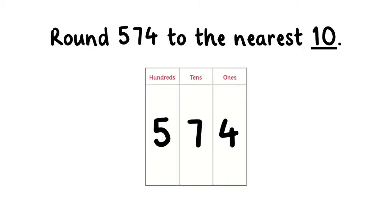Now, let's round 574 to the nearest tenth. Since the ones digit is four, which is less than five, we keep the tenths digit the same. Therefore, 574 rounded to the nearest tenth would be 570.